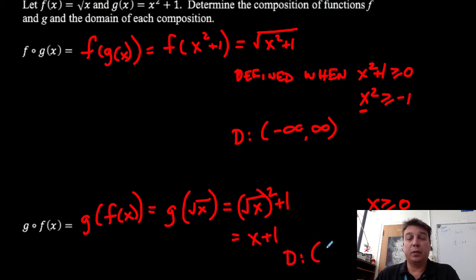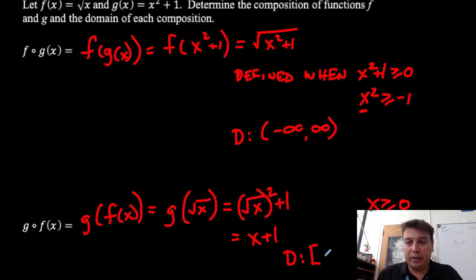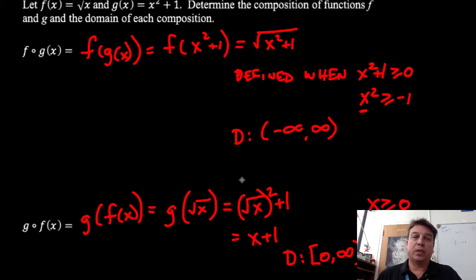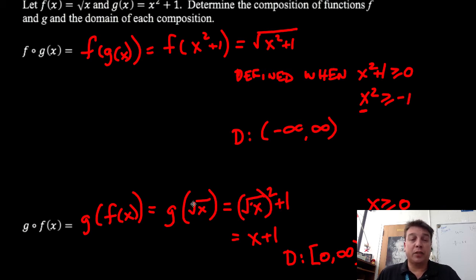My domain here is restricted — it should be a bracket at 0. So the domain is from 0 to positive infinity, written as [0, ∞). The whole composition only works as long as x is greater than or equal to 0, because of the square root of x we started with. When we finished our work, we were left with x plus 1, and the only restriction that came about was x has to be greater than or equal to 0. So here's our new domain.